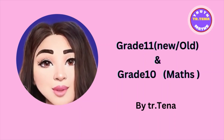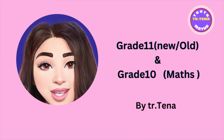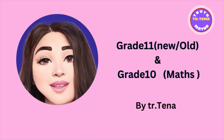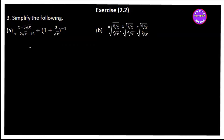In this video, we are covering Grade 10 and Grade 11 content. This is Grade 10, Chapter 2, Exercise 2.2, number 3 and number 8. We will simplify the following expressions — simplify using the properties of surds and radicals.